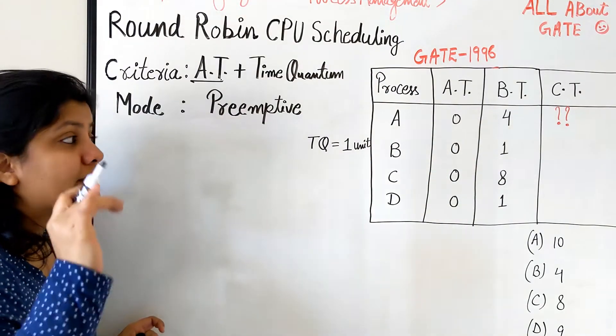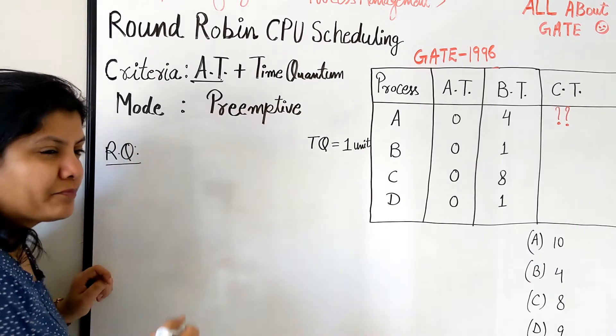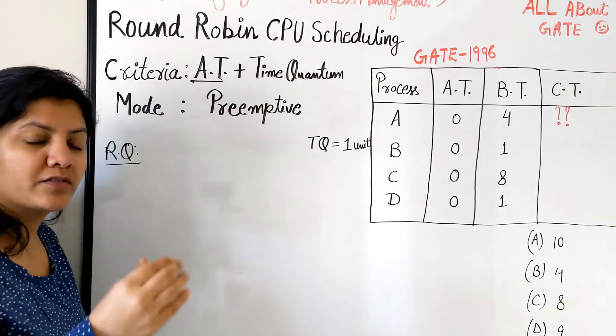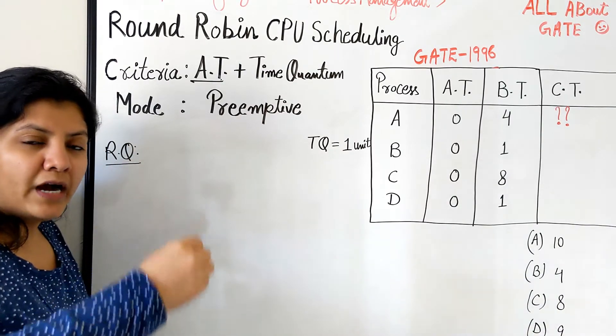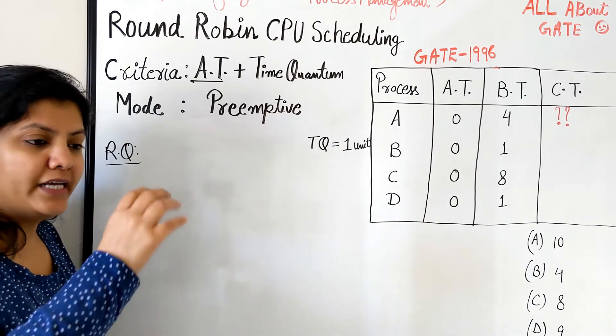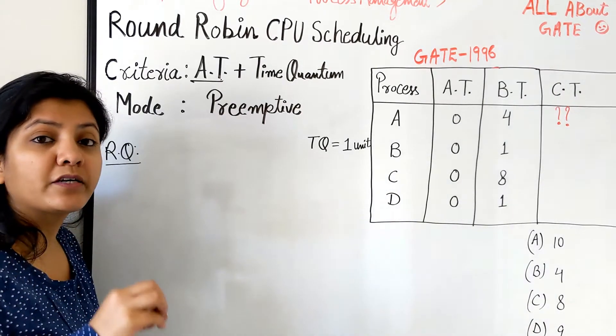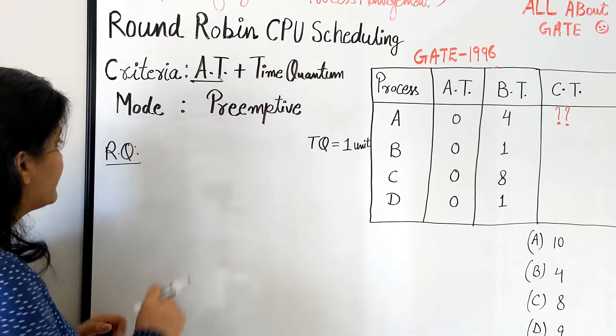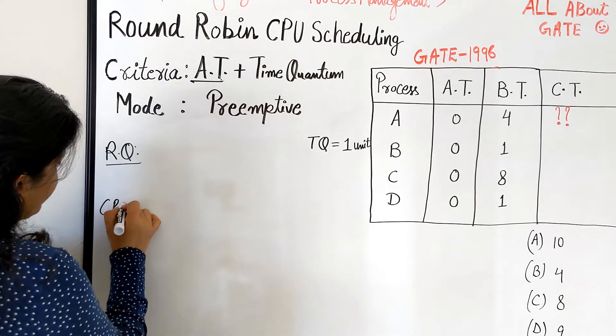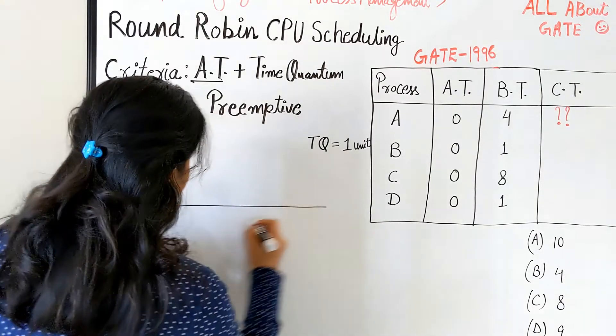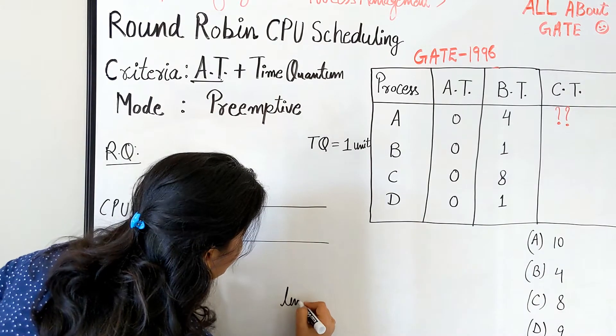So now in order to understand this algorithm we have to have two things. One is the ready queue which is very important because every time whichever process will be first in the ready queue will get the next chance. So we have to maintain the ready queue perfectly. Whatever is going to be the sequence of ready queue, that is exactly going to be the sequence of your Gantt chart. So here is your ready queue and here I am going to make the CPU execution over the Gantt chart at time 0, so this is all over the time.